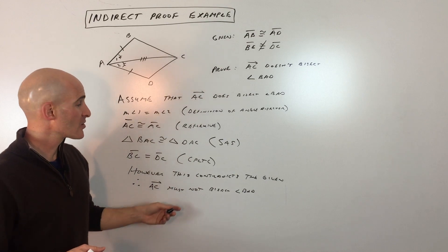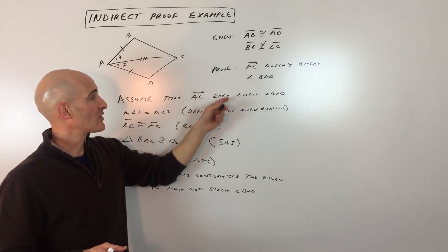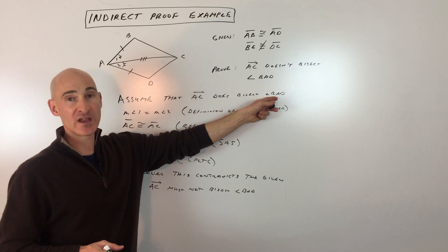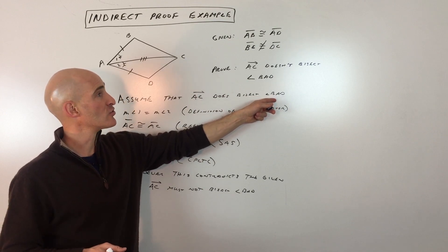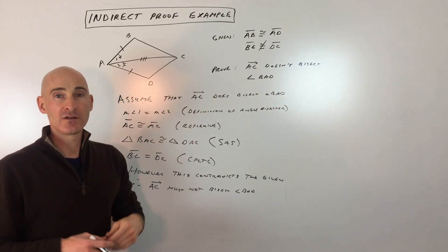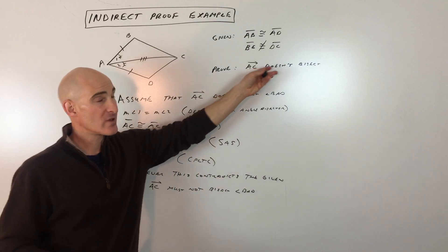That's exactly what happened here. Our original assumption—that it does bisect angle BAD—must be false, and the opposite is true. Therefore, you can assume that what you're trying to prove is in fact true.